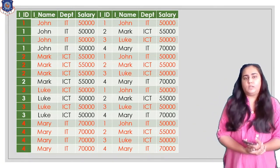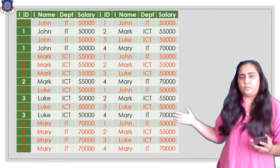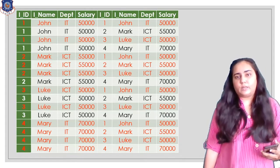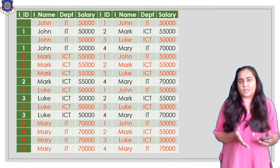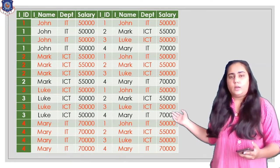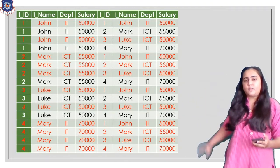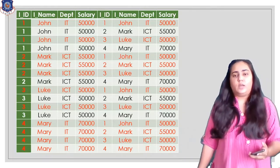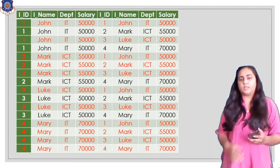Consider the Cartesian product table. I've highlighted all rows where the salary on the left side is greater than or equal to the salary on the right side. For example, 50,000 compared with 50,000 — both are equal, so it is highlighted. Similarly 55,000 with 55,000 is highlighted. But 50,000 compared with 70,000 is not highlighted because 50,000 is less than 70,000. So whenever the salary on the left is less than the salary on the right, it is not highlighted.